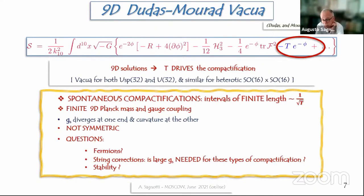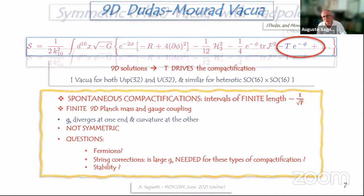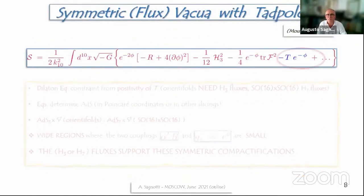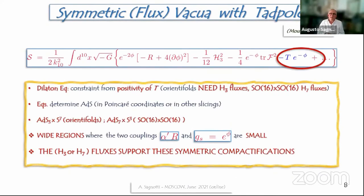The problem is that this solution is a well-defined solution of Einstein's theory, but it has two problematic regions. The string coupling diverges at one end, and the curvature diverges at the other. The interesting fact about the solution, and I kindly ask you to keep it in mind, is that the solution is not symmetric. Now the questions that I will try to address: How do Fermi fields behave in this context? And the other question is string corrections in general. Is a large string coupling needed for these types of compactification? And the next question is the issue of stability.